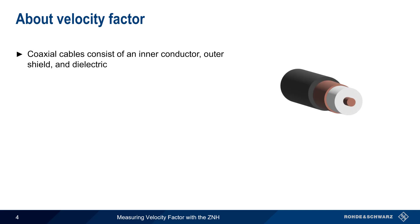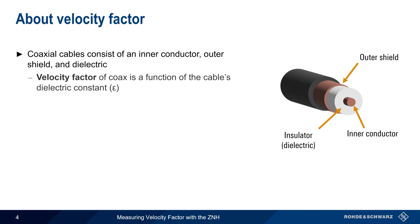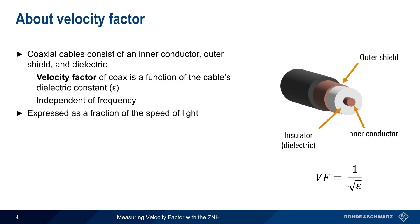As you may already know, coaxial cables consist of an inner conductor, an outer conductor, and an insulating or dielectric material between them. The velocity factor of a coaxial cable is a function of that cable's dielectric constant, and is independent of the frequency of signals carried by the cable. Velocity factor is normally expressed as a fraction of the speed of light, and is therefore a unitless quantity between 0 and 1.